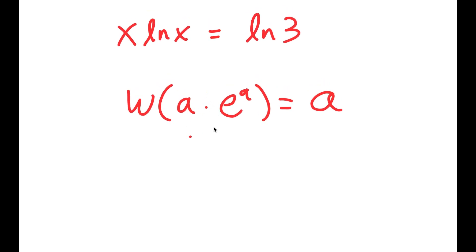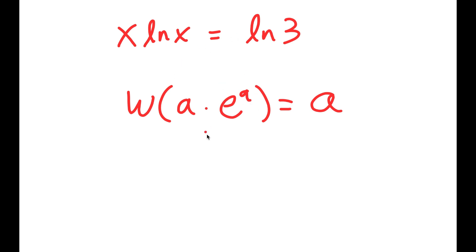So in this case, I'm going to rewrite this so that it suits the W Lambert formula. We need to change this to be in the form a times e to the power of a. Well, how am I going to do that?